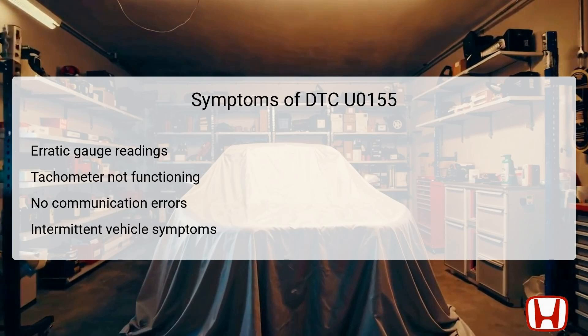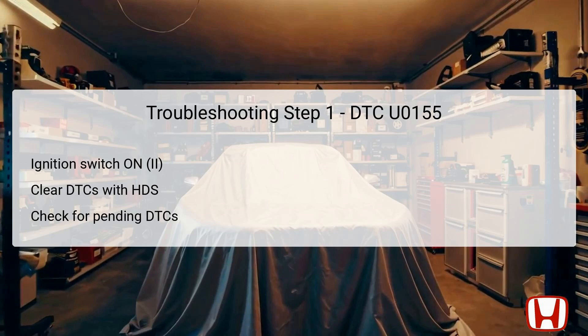Symptoms associated with DTC U0155 can vary, but typically include erratic or incorrect readings on the gauges, notably the tachometer not functioning properly. Drivers may notice that certain dashboard indicators don't reflect real-time data, or may fluctuate unexpectedly. Additionally, intermittent vehicle behavior signals that the communication with the ECM is unstable, impacting various engine performance metrics. It's crucial to document these symptoms to accurately trace back to the underlying cause during troubleshooting.